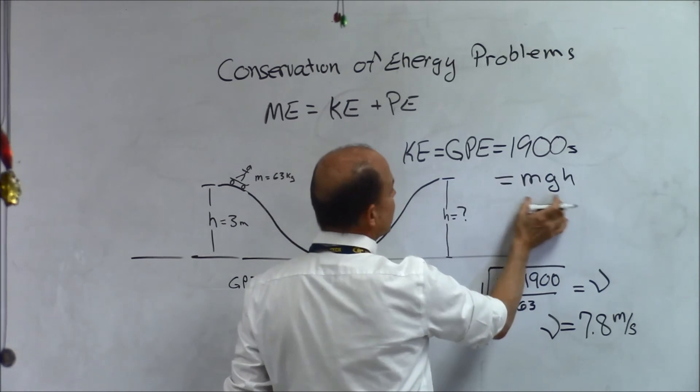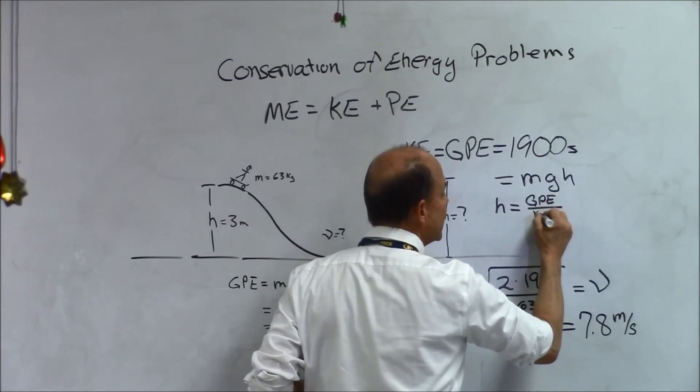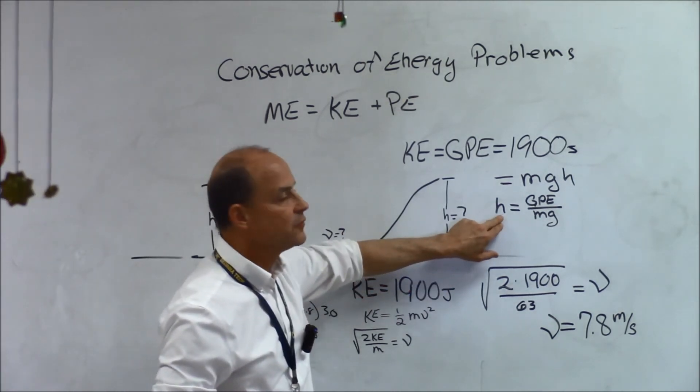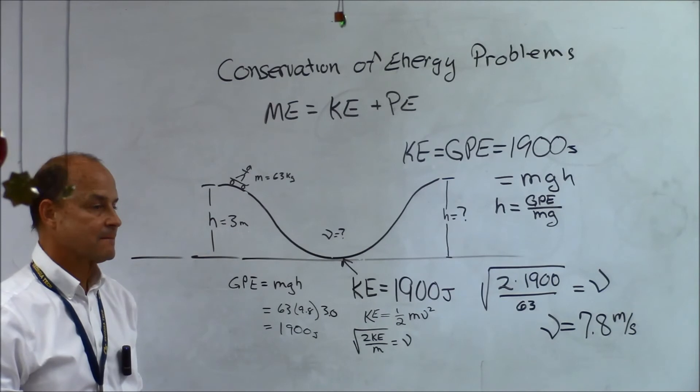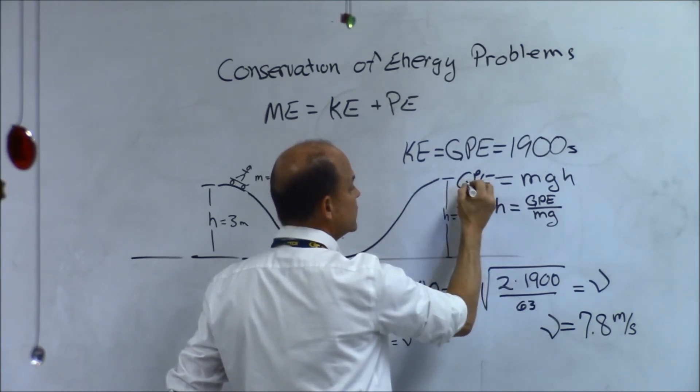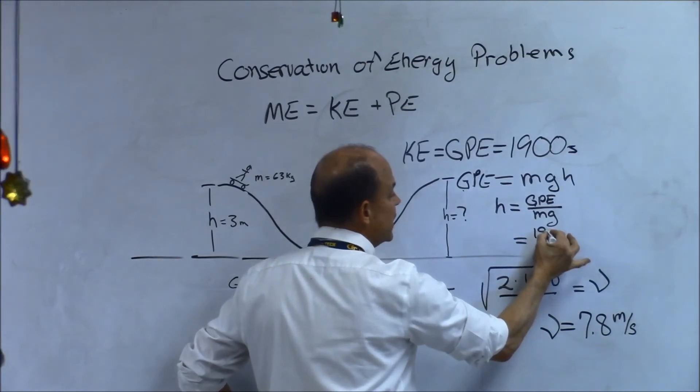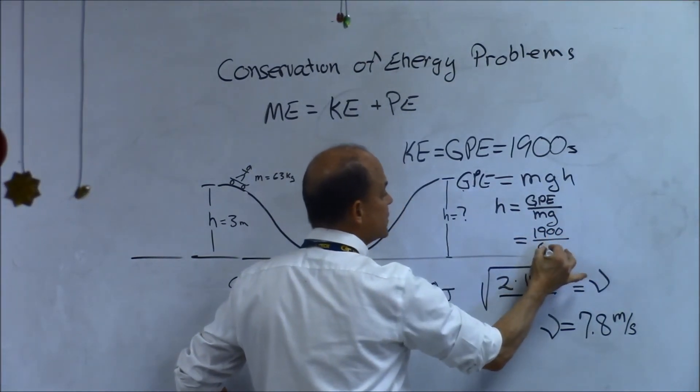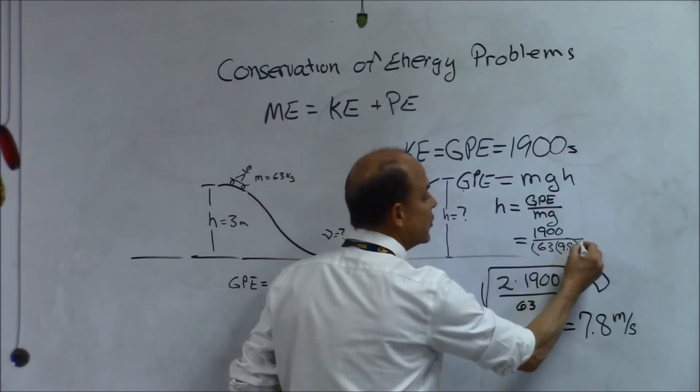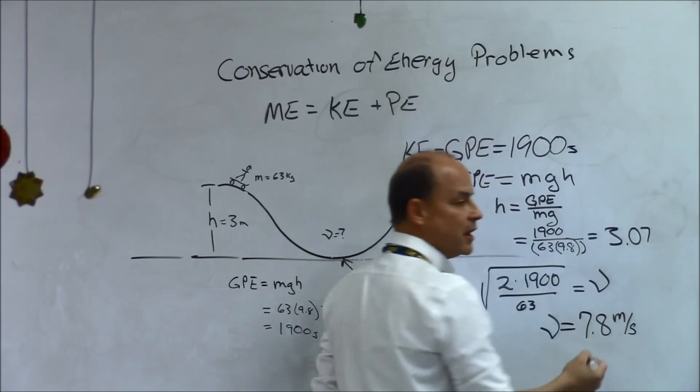Now if we know that GPE is equal to 1900, we know that GPE is equal to MGH, and if we're trying to figure out what this new H is, then we have to solve this equation for H. We're going to divide both sides of the equation by MG. So, H is equal to GPE divided by MG. All I'm doing is solving for H in the potential energy equation. So, if GPE is equal to MGH, then H is equal to GPE divided by MG. We know what the GPE is, we know what his mass is, and we know what the acceleration of gravity is, so we're going to plug in numbers. That's 1900 divided by 63 times 9.8. Make sure that you've got parentheses in the denominator. Is equal to 3.07.